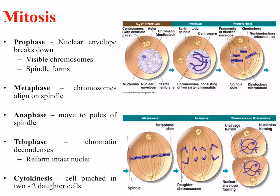Recapping mitosis: during prophase, the nuclear envelope breaks down and you can visibly see chromosomes and spindle forms. During metaphase, the chromosomes align on the spindle that has been formed. Anaphase is where chromosomes are separated and move to the poles of the cell, pulled apart by the spindle. Finally, telophase is where chromatin decondenses and reforms intact nuclei.